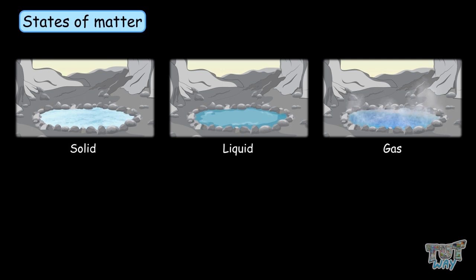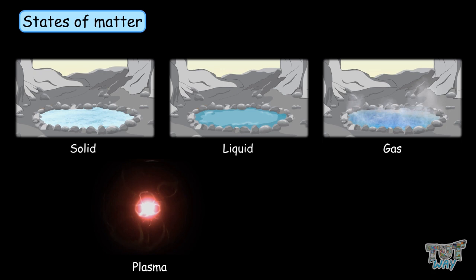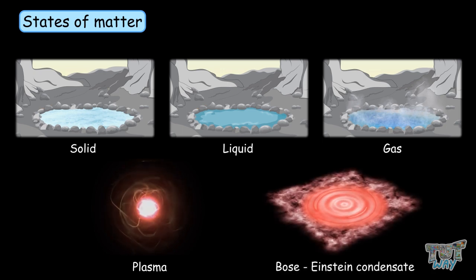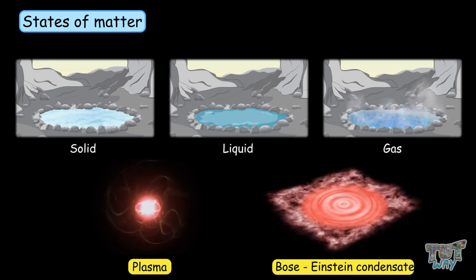The fourth state of matter is considered as plasma, and the fifth one is Bose-Einstein condensates. There are even more states of matter, but we will be learning about these two states: plasma and Bose-Einstein condensates.